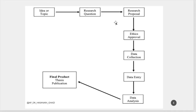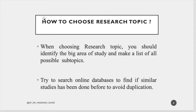Of course we need ethics approval — we cannot conduct any study on animals or humans without approval. Then we collect the data, clean and enter it into software, and perform statistical analysis. The final product can be a thesis, publication, dissertation, or conference presentation. After finishing, you move on to another topic — that's why it's called a cycle.